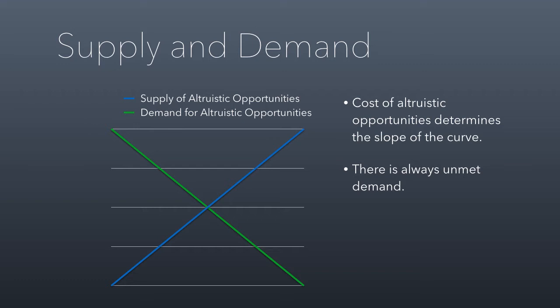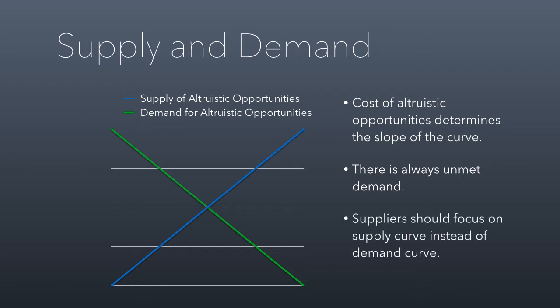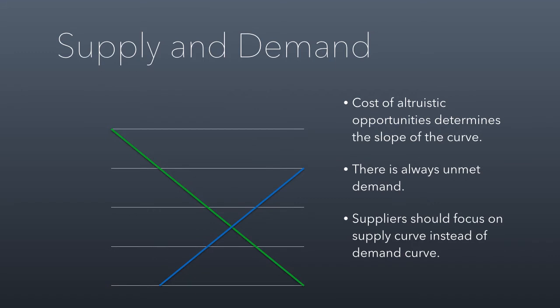Going back to the starving children example, some people won't give $20 a month, but more people will give $10 because at that point it becomes cheap enough to make the donation. There's always going to be unmet demand beyond that $10 point because some people would do it for $5, some for $1, some for a penny a month. As long as that's true, there are always willing donors, just not willing suppliers. If this holds, suppliers should focus on their own supply curve rather than on the demand curve. If you can move the supply curve down and to the right, you're supplying more altruism at a cheaper price.